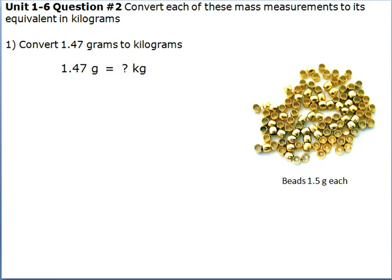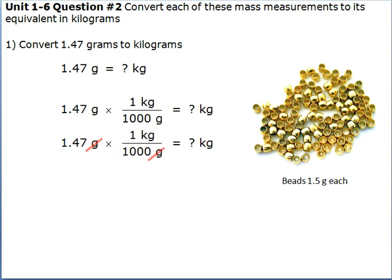Now, as we know, there are 1,000 grams in a kilogram. Therefore, we need to multiply 1.47 grams by 1 kilogram and divide that by 1,000 grams. One thing to be aware of is that your units line up correctly in order to cancel out the grams and leave you only with kilograms as shown.